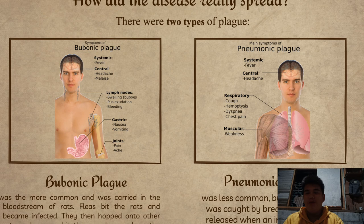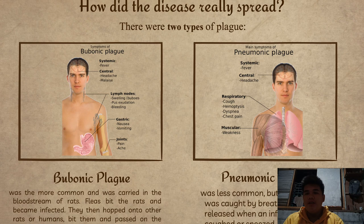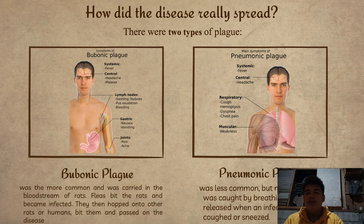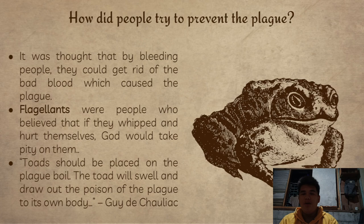There are two types of plague. First is bubonic plague, which was the more common form — it was carried in the bloodstream of rats. Fleas bit the rats, became infected, then latched onto other rats or humans, bit them, and passed on the disease. Second is pneumonic plague, which was less common but more deadly — it was caught by breathing in germs released when an infected person coughed or sneezed.